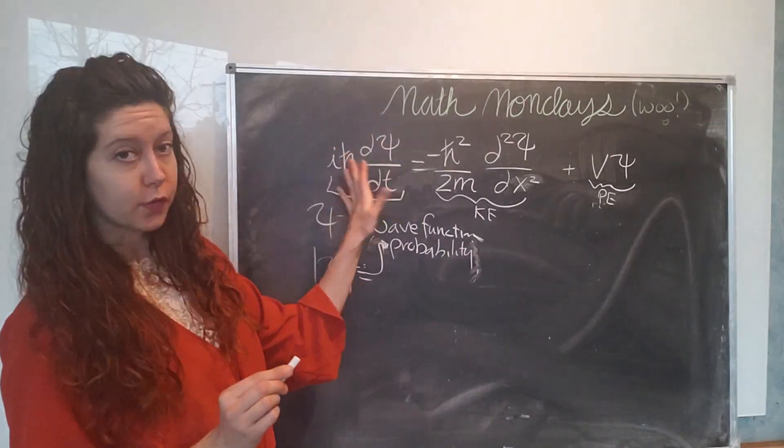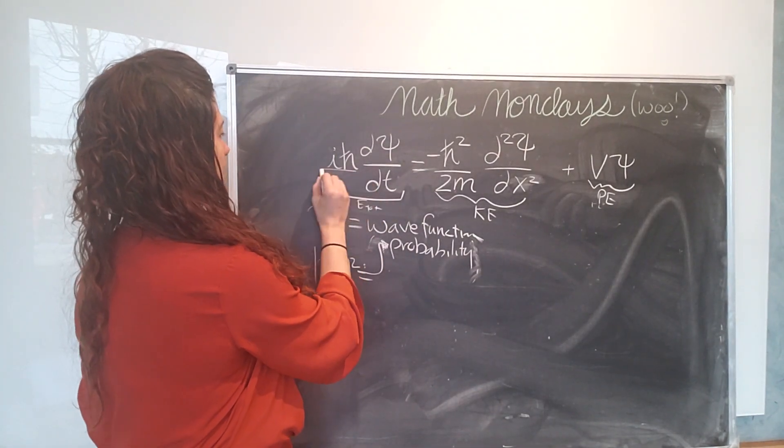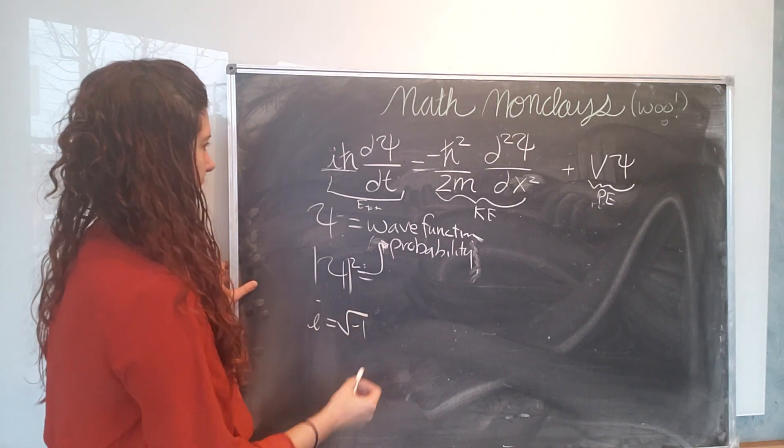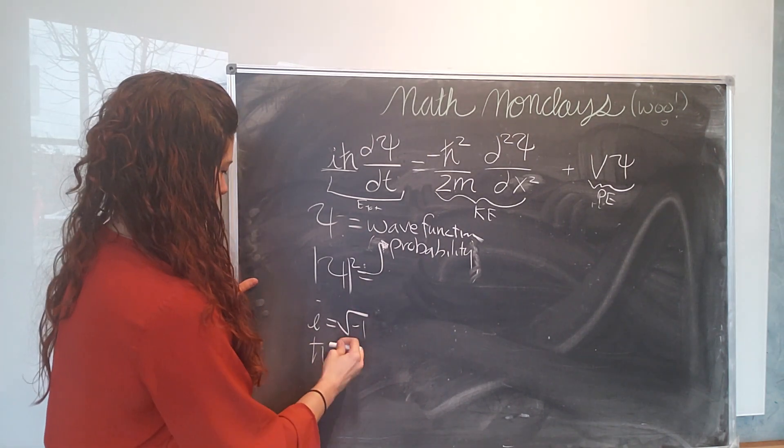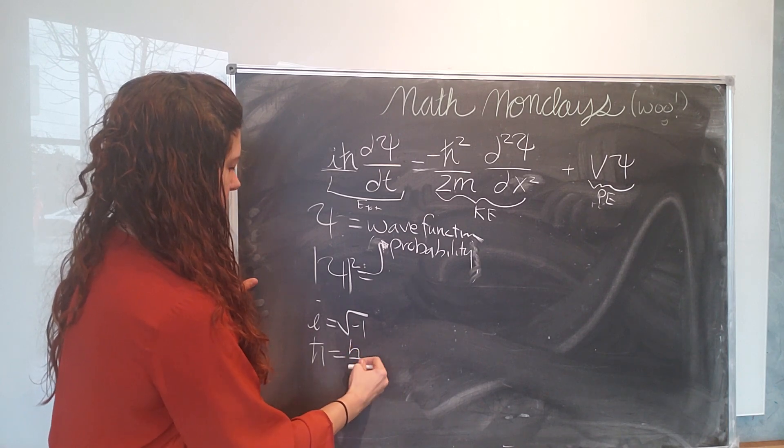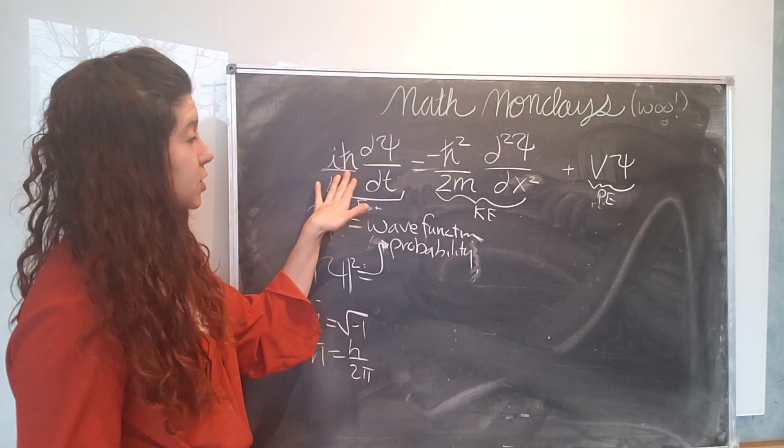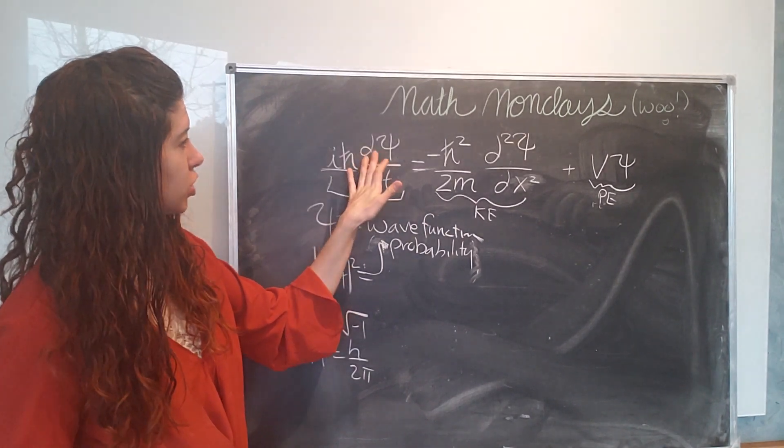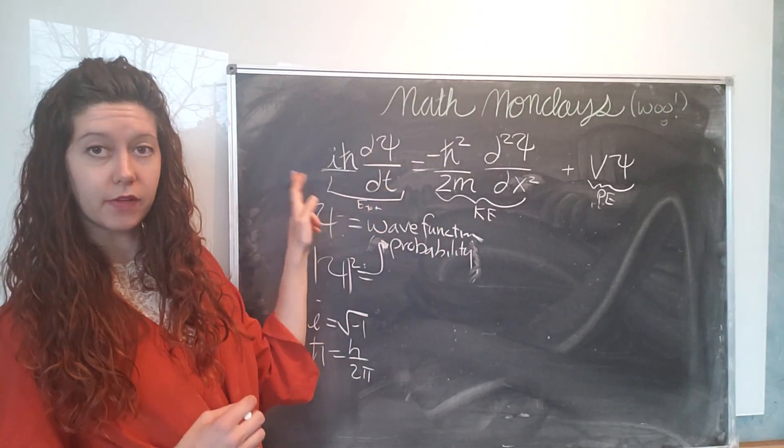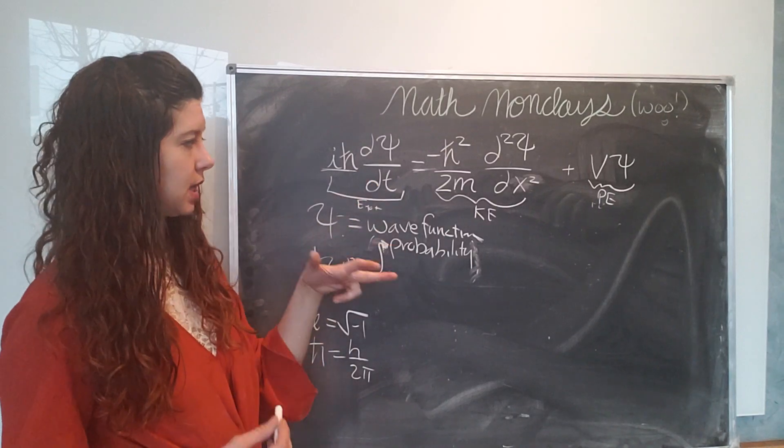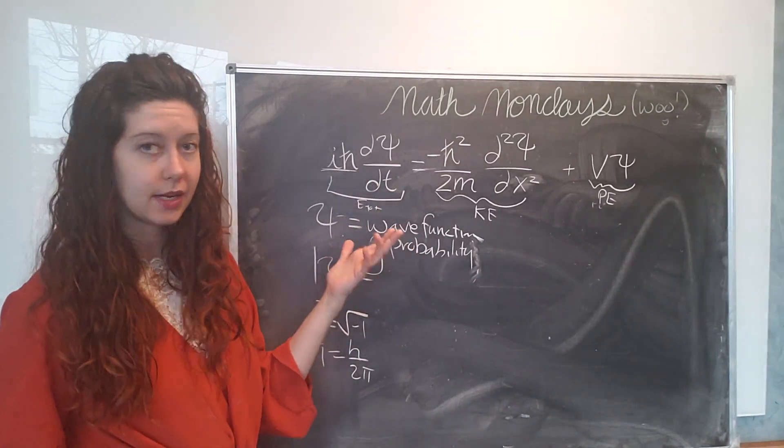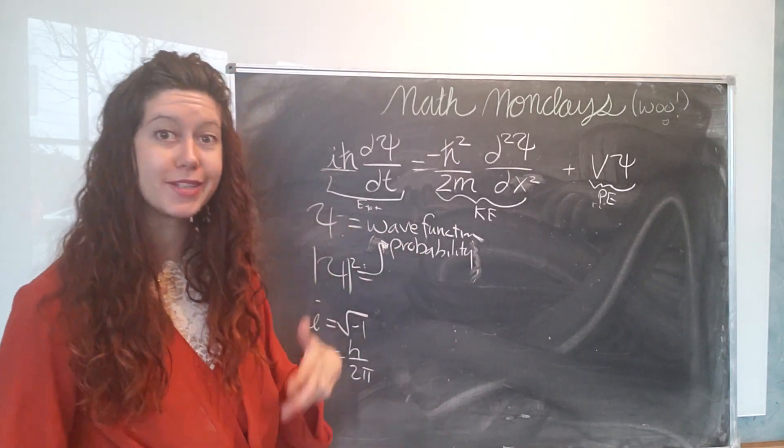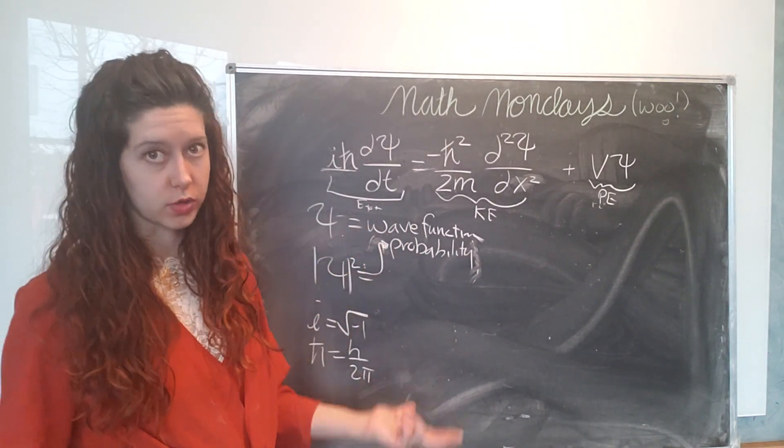Okay, so let's look at this first term on the left. So this part i h bar, well i is just the square root of negative one and h bar is just Planck's constant h divided by two pi. So this is a constant term and the thing that is changing is this partial derivative of the wave function with respect to time. So what this is saying is that we need to figure out how our wave function is changing over time.